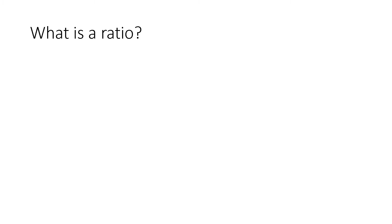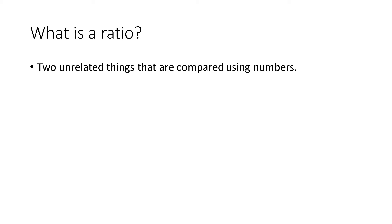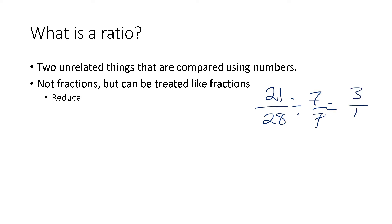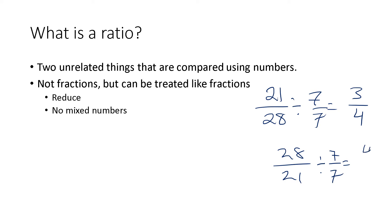Brief review: what is a ratio from last time? Remember, these are two unrelated things that we're comparing using numbers. Remember that they're not fractions, but we can write them like fractions. We can reduce ratios. If you have a ratio of 21 to 28, those will both divide by seven, and we get a smaller ratio of three to four. Ratios don't have mixed numbers, so if you reduced 28 to 21 and got four to three, you would not write it one and one-third. That's not a proper answer for a ratio.